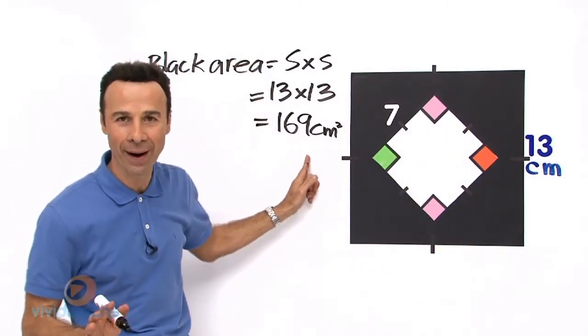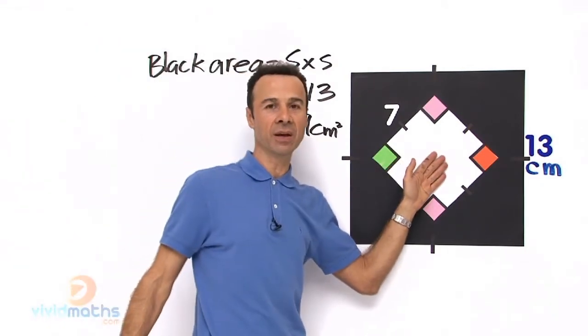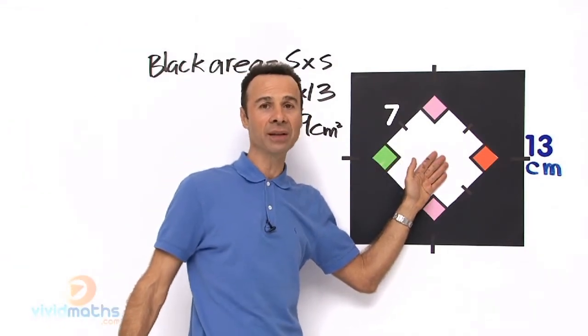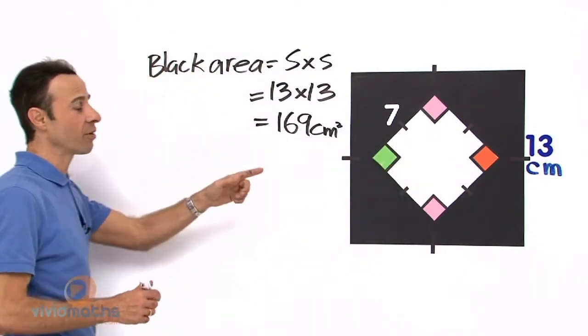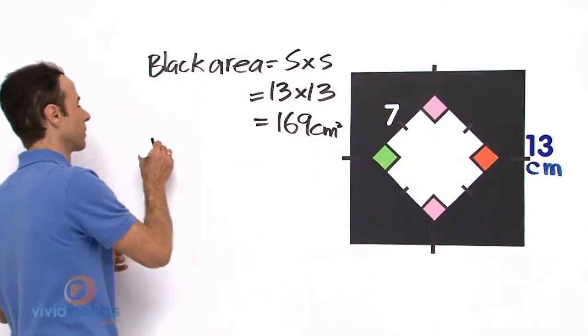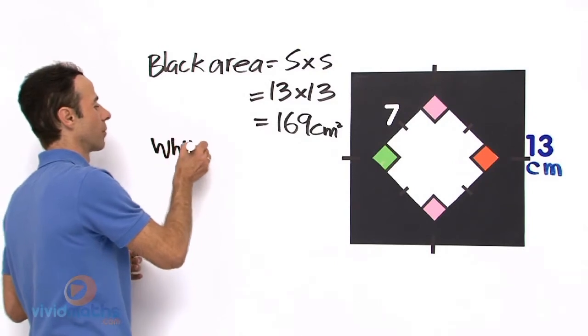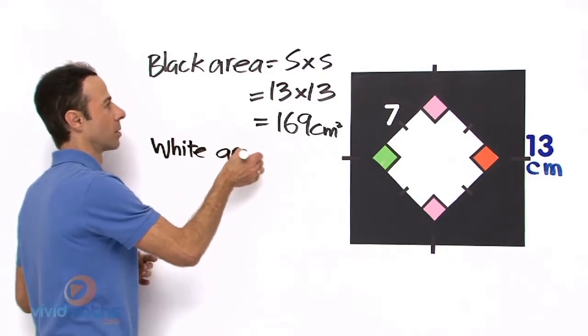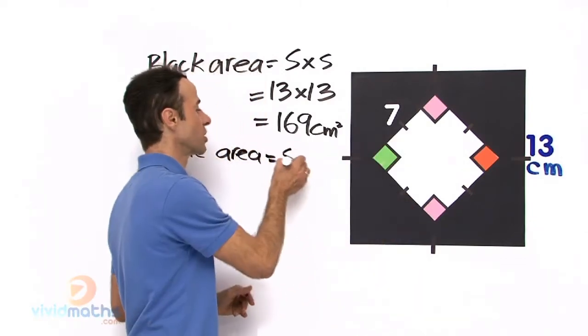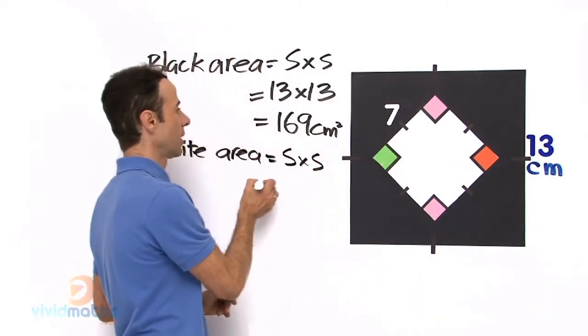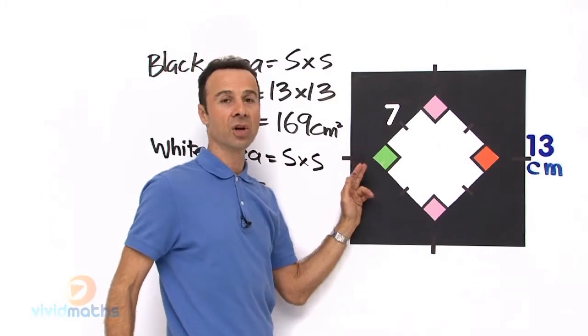Now we have to take away the white area here which is the small white square. So in order to get that area we will call it the white area, equals side times side because it is a square and that is going to be 7 times 7.